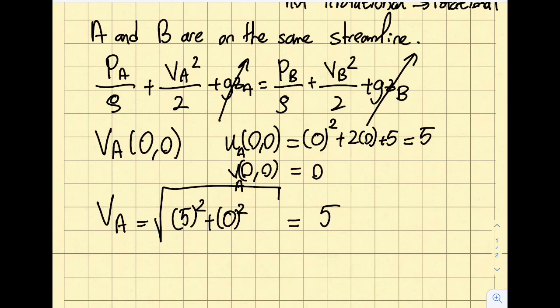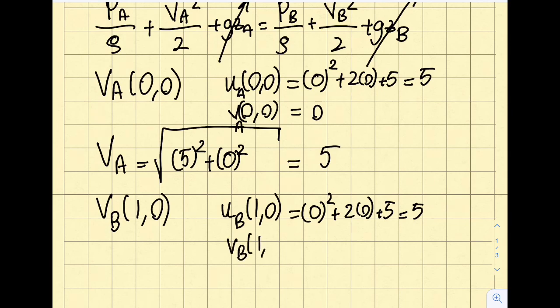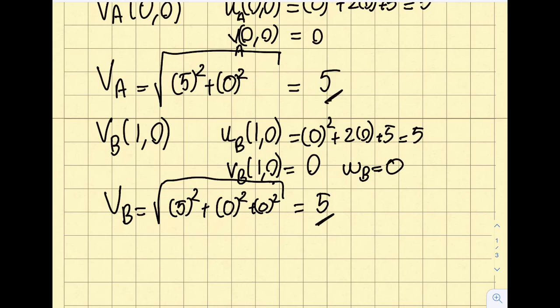So let's do the similar approach for vb value. This time around, vb will be x is 1, y is 0. So ub will be, y is still 0, 0 squared plus 2 times 0 plus 5. That will be 5. And if I go ahead and find my vb, which is also at 1,0, it's 0 as well. And also, wb is also 0. Now, same logic. So if I go here, vb turns out to be, in this particular case, 5 squared plus 0 squared plus 0 squared, if you do 3D, will be equal to 5. So you can see va is equal to vb.